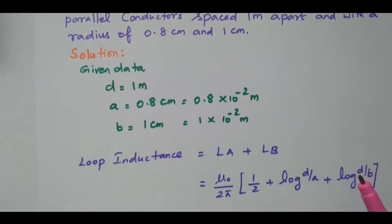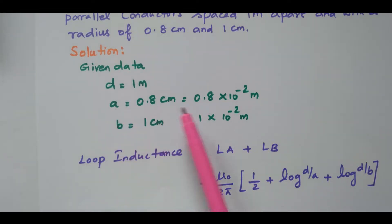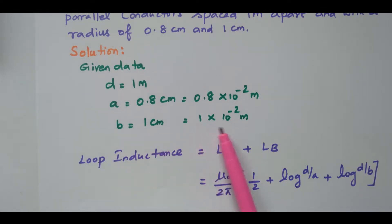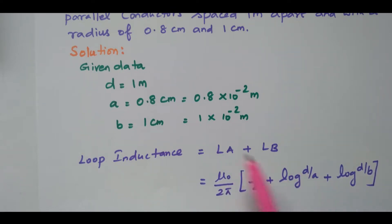Given data: The distance between the conductors D = 1 meter. The radius of the first conductor a = 0.8 centimeter = 0.8 × 10⁻² meter. The radius of the second conductor b = 1 centimeter = 1 × 10⁻² meter. The loop inductance formula is L = (µ₀/2π)(1/2 + log(D/a) + log(D/b)).